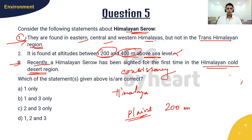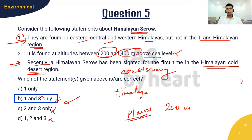Eliminating options C and D based on statement two being wrong, we are left with options covering statements one and three. If the third statement says it was sighted for the first time in the Himalayan cold desert region, then it could not have been found in the trans-Himalayan region, so statement one should also be true. The answer is one and three only. You can deduce this through consistency — even without knowing anything about the Himalayan Serow. At minimum, eliminating statement two gives you a 50-50 chance.